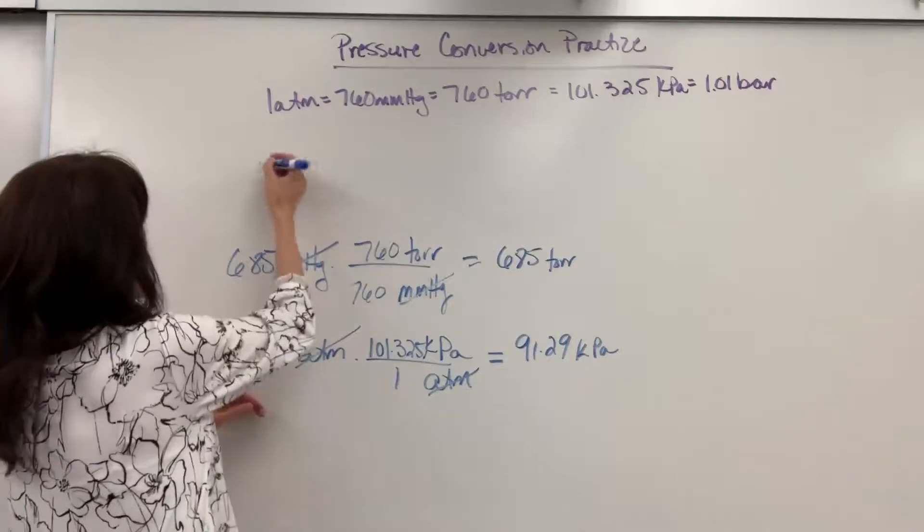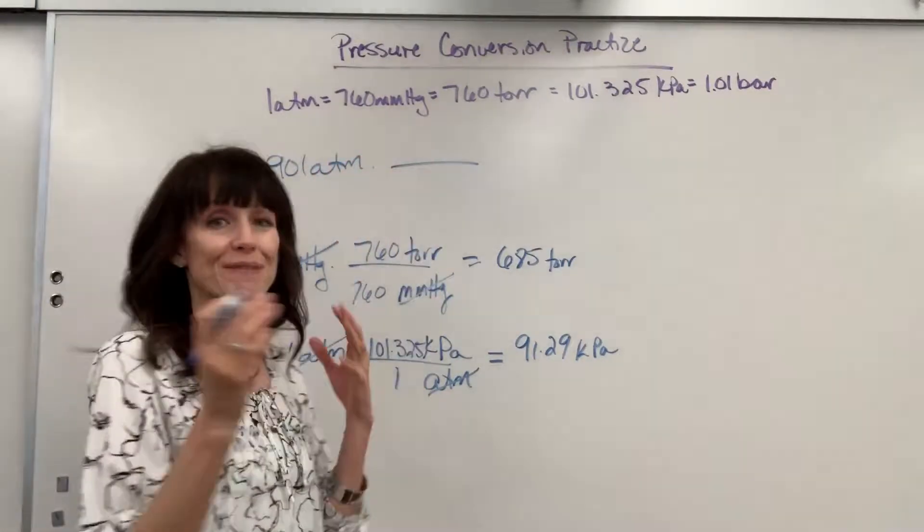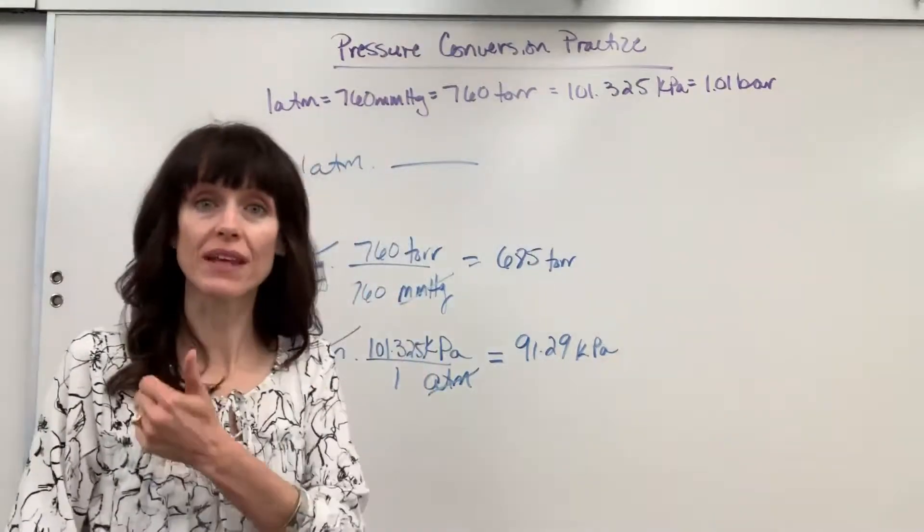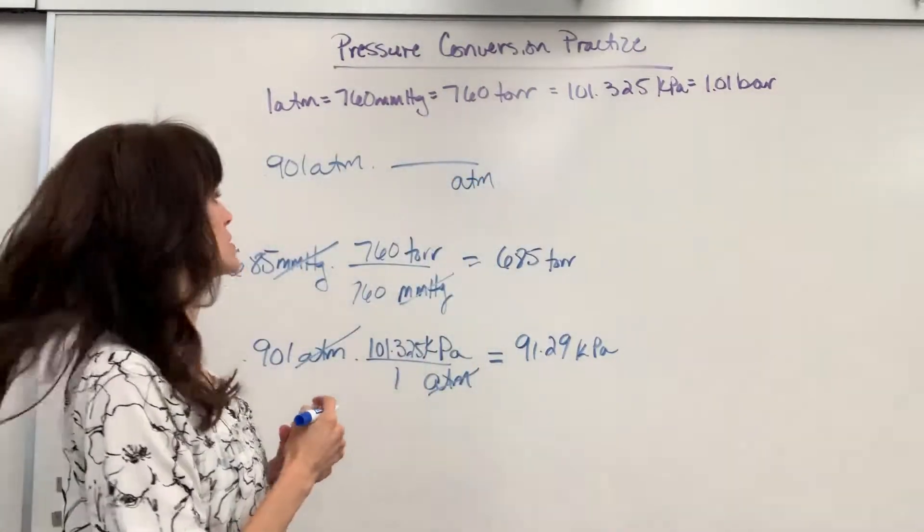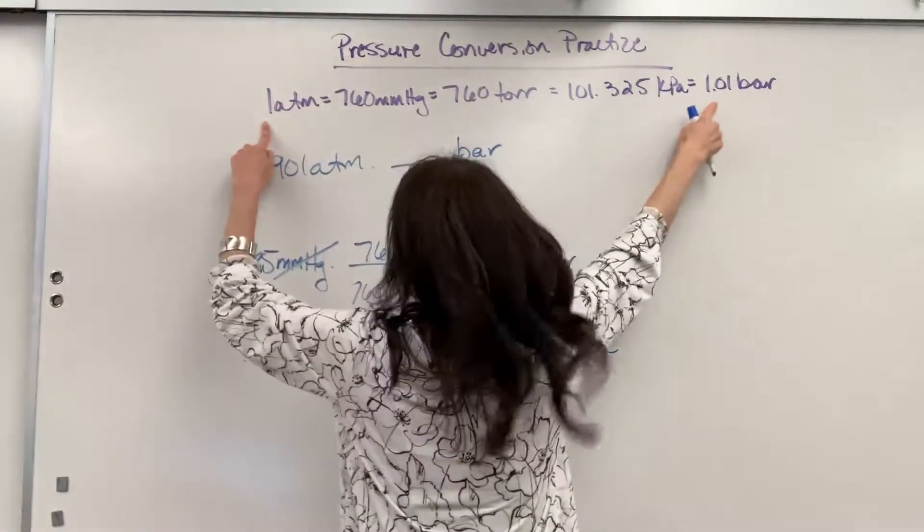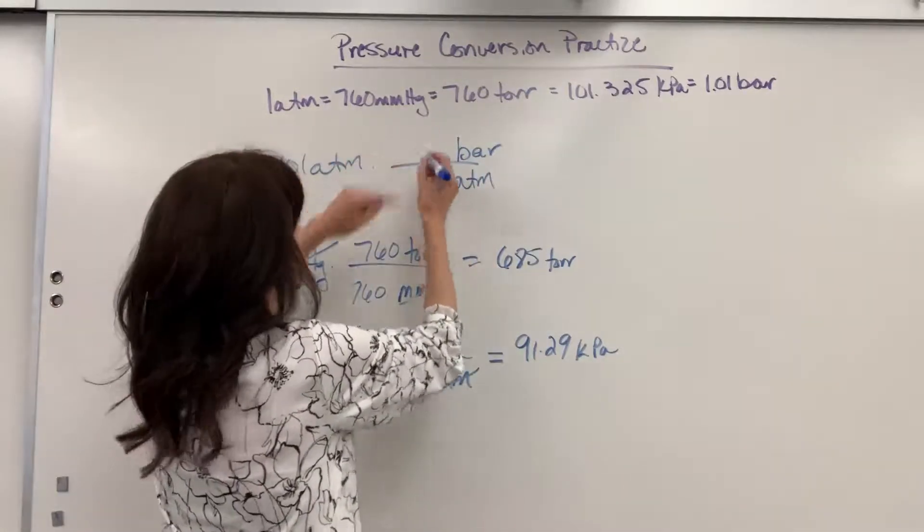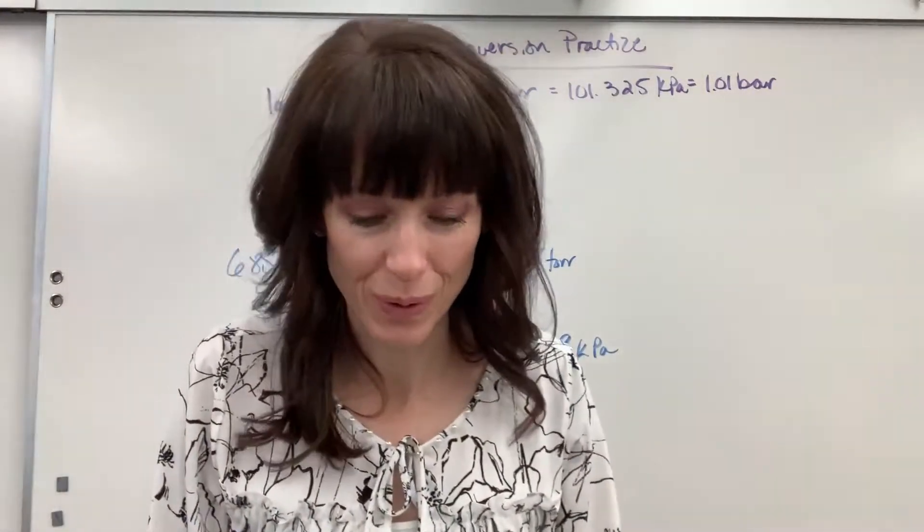So if we have our 0.901 ATM again. Okay, first you're thinking units. Get rid of the ATM. So it goes on the opposite side of the fraction so it cancels, and we want to end with bar. I'm going to put that up top. Now I simply attach our numbers right here. So one ATM is equivalent to 1.01 bar. Really similar, super close.